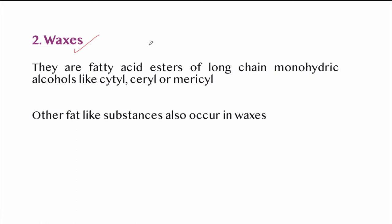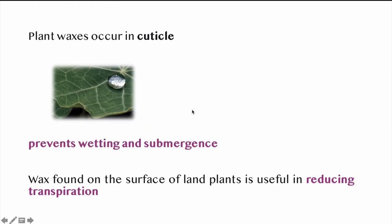Waxes are fatty acid esters of long-chain monohydric alcohols. Other fat-like substances also occur in waxes. Plant wax occurs in the cuticle along with cutin and as a grayish waxy coating or bloom around plant organs. Wax found on the upper surface of floating leaves prevents wetting and submergence. Wax found on the surface of land plants is useful in reducing transpiration — preventing loss of water from the plant.